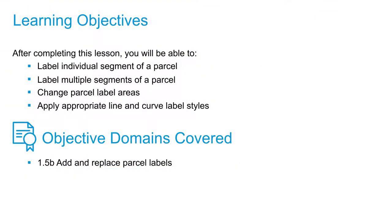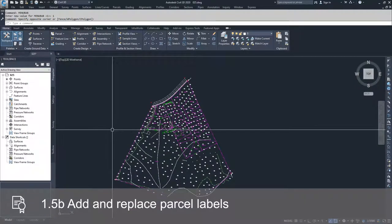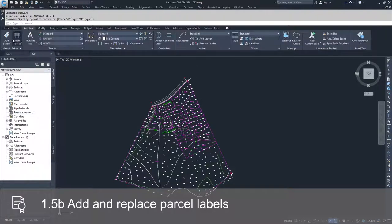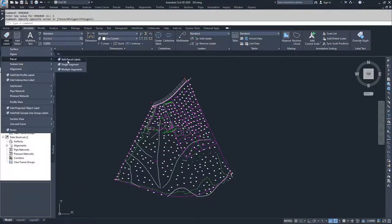In this video, we're going to discuss labeling a parcel. We're going to get into the detailed method for labeling the parts of a parcel. To get into the command for labeling a parcel, navigate to the Annotate tab in the ribbon bar, drop down Add Labels, choose Parcels, and then Add Parcel Labels.